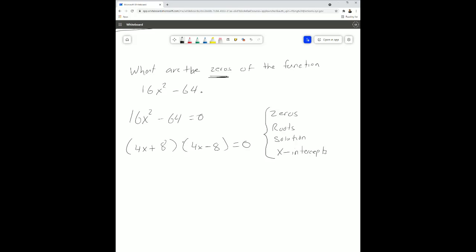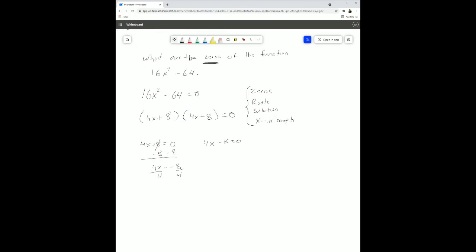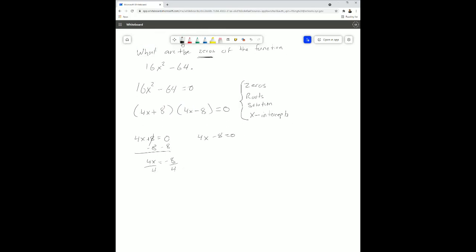And now we have the zero product property. We can set both of these equations, or both of these binomials equals to 0. 4x plus 8, 4x minus 8 equals 0. And then we're just going to solve for x. So subtract 8 to both sides over here. 4x is equal to negative 8. Divide by 4. Divide by 4. We have to scroll down a little bit. And x is equal to negative 2.